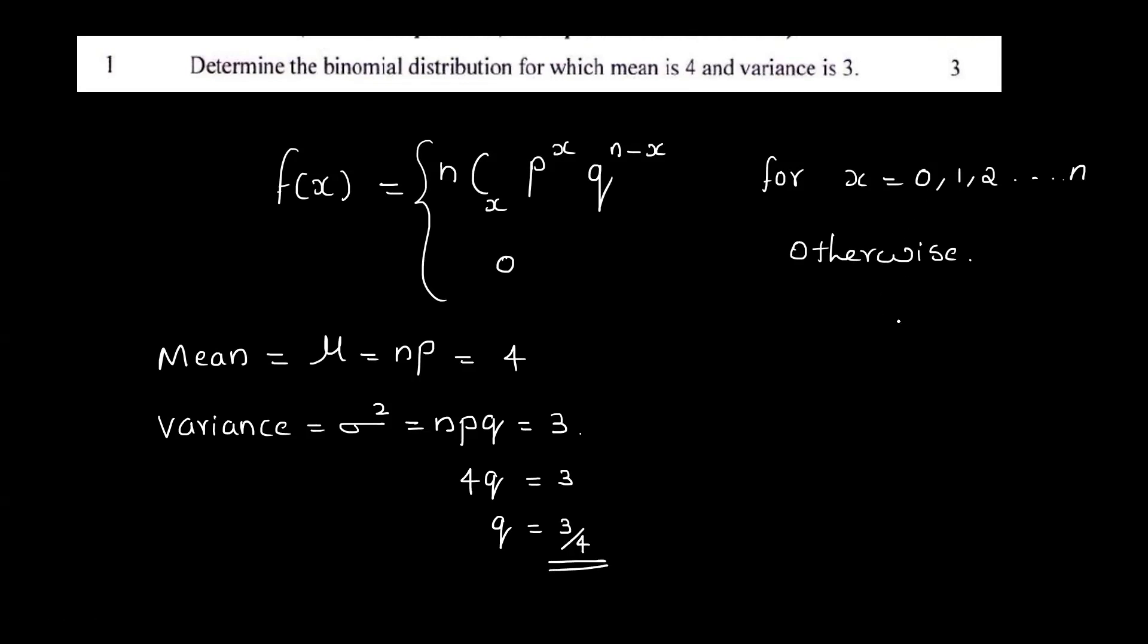If we learn binomial distribution, you will see one thing. 0 less than p less than 1. That means p is the value between 0 and 1. This means p plus q must be equal to 1. What is probability of success? What is probability of failure? If you add them, it is 1.